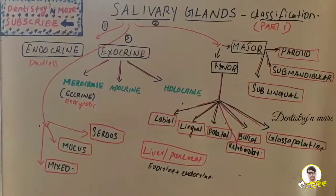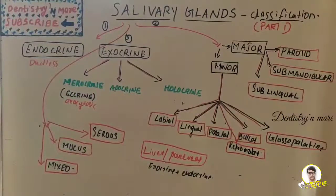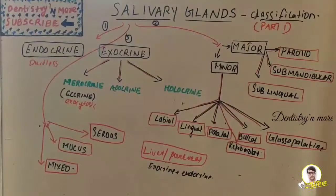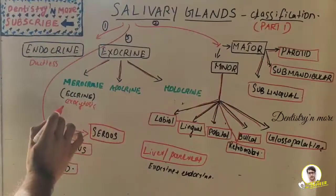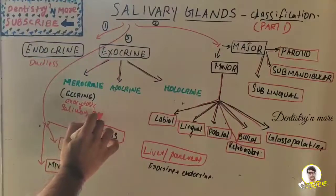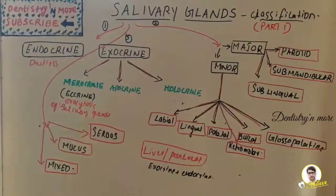Exocytosis is a process by which the contents of a cell vacuole are released to the exterior through fusion of the vacuole membrane with the cell membrane. That is how this process works. Merocrine glands include our salivary glands — both serous and mucous salivary glands are examples of merocrine glands.